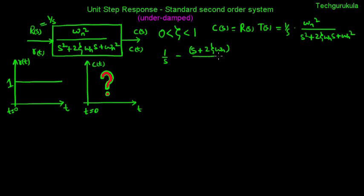We can rewrite this into 1 over s minus s plus 2 zeta omega n, over s squared plus 2 zeta omega n s plus omega n squared. You can verify this — if you do cross multiplication, you'll find that s squared plus 2 zeta omega n s gets cancelled, and we're left with omega n squared in the numerator and s times the denominator polynomial.